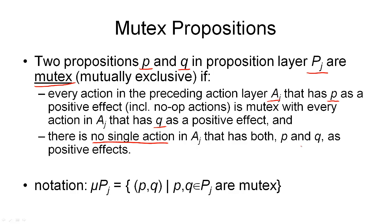Now, I should note: when I talk about independent actions, what is actually written in the definition requires the two actions to be mutex with each other — which we haven't defined yet, but we will get to shortly. Before we continue, here is some notation. I introduce the symbol mu PJ for the set of all pairs of propositions P and Q that are in proposition layer PJ and are mutex. So mu PJ contains all the mutex pairs in proposition layer PJ.